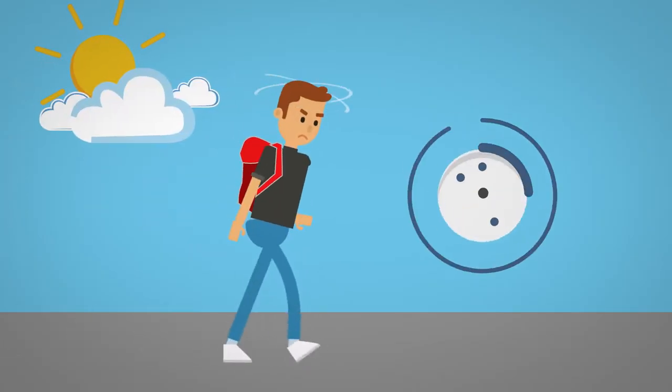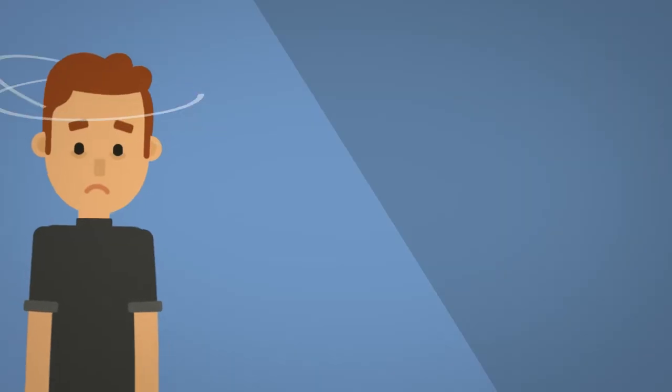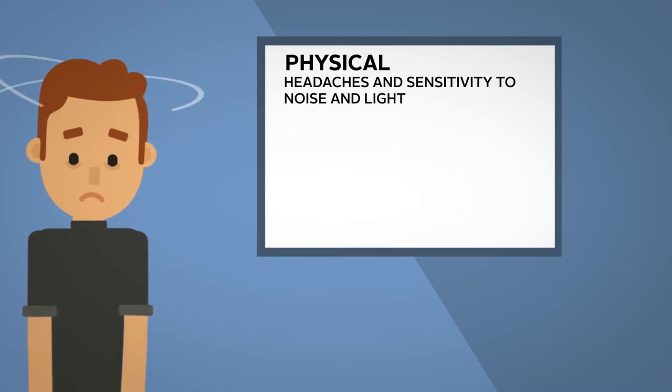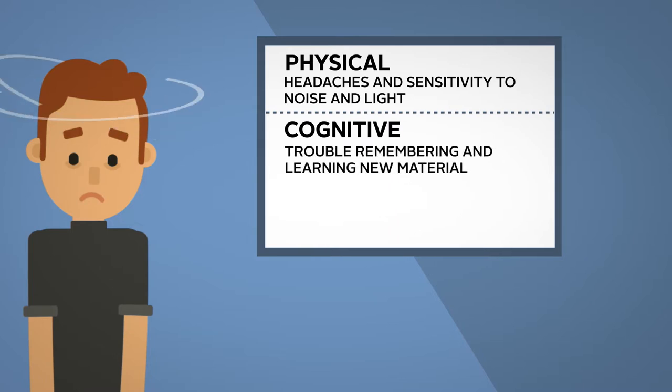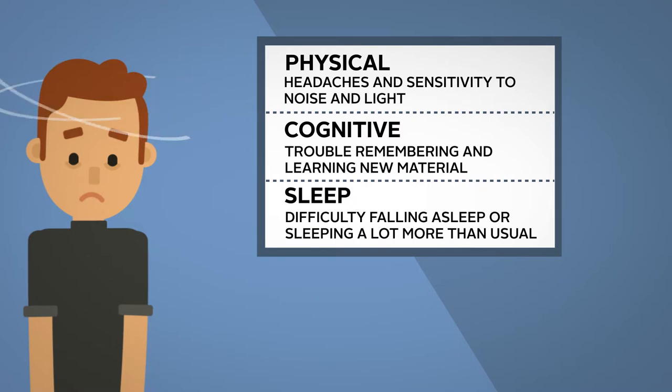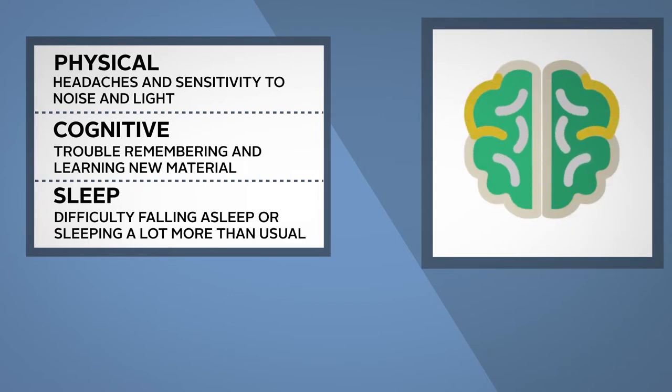Students who have sustained concussions might return to school with persistent invisible symptoms. A concussion can make a person have physical symptoms like headaches and sensitivity to noise and light, cognitive symptoms like trouble remembering things and learning new material, and sleep symptoms like difficulty falling asleep or sleeping a lot more than usual. These symptoms show that the brain's neurochemicals are out of balance while it's in the process of healing.